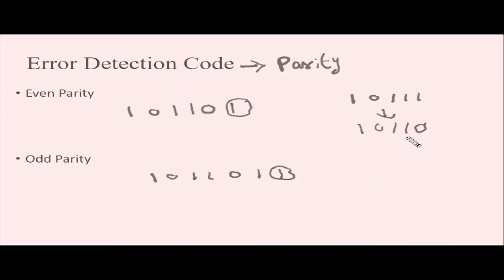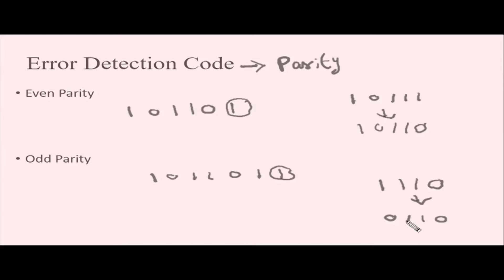But he does not know in which location that corruption happened. For another example, suppose I am sending information with an odd number of ones. While sending this information, a noise was added and one bit was corrupted. Whenever the receiver receives this information, he will count the number of ones present. He should get an odd number of ones, but he got an even number. So he will realize that something went wrong and incorrect information was received. We can detect the error in this way.